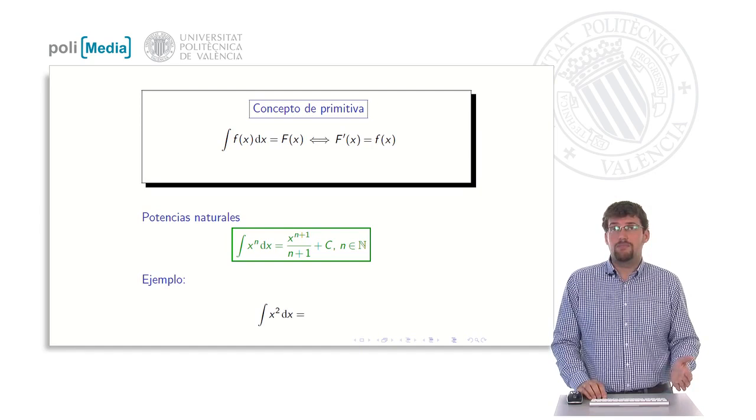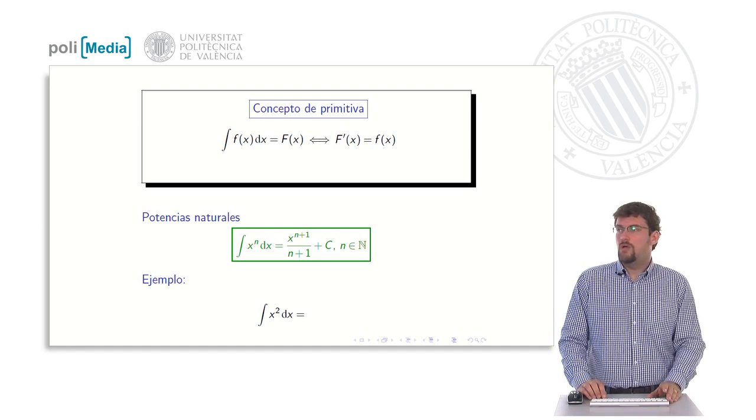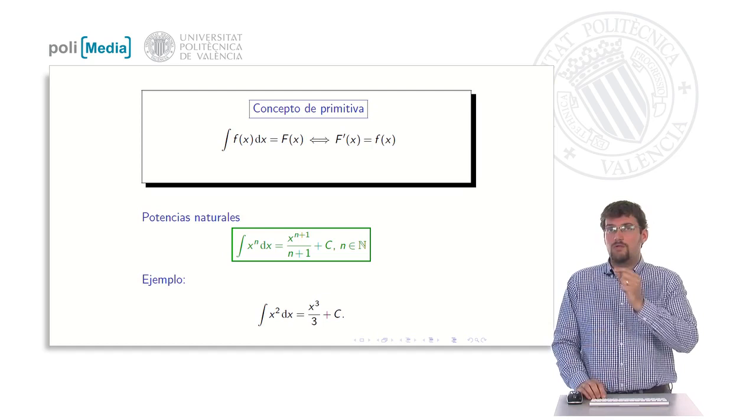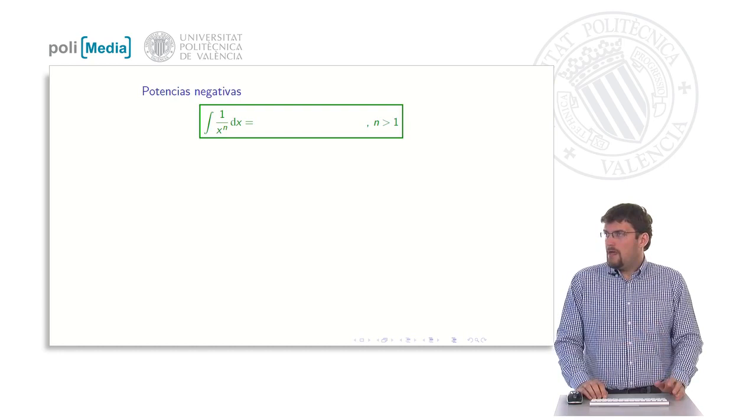Well, an example of this expression is the simplest integral that we can find, the integral of x. In this case, the integral of x squared, which essentially is x cubed divided by 3 plus the constant. In other words, one more degree and below the same degree that we have been putting.